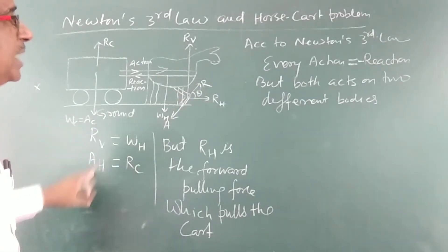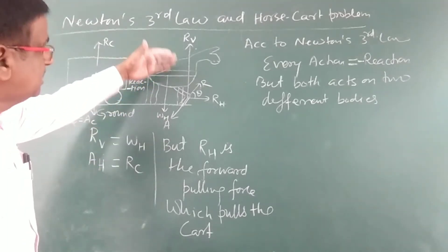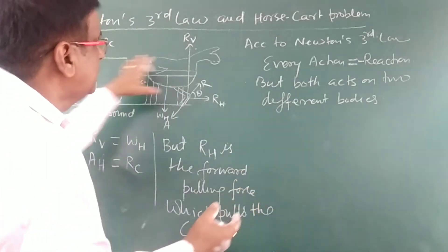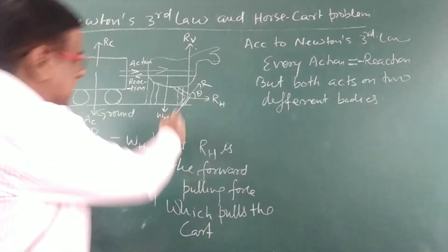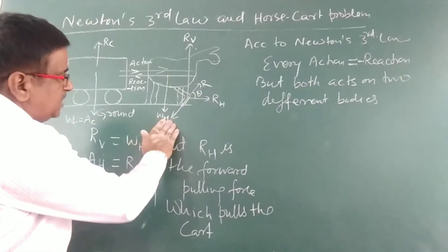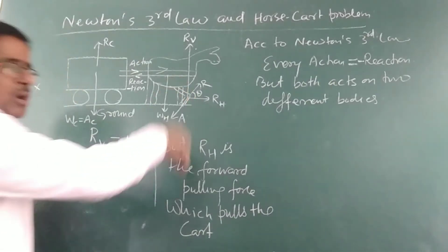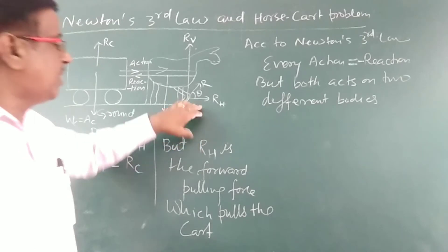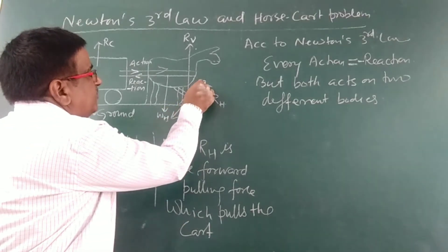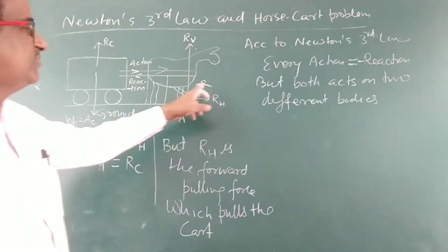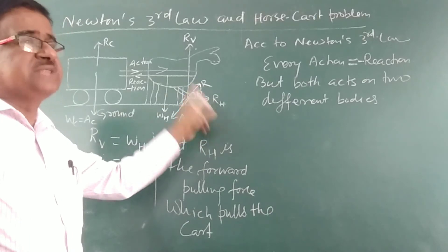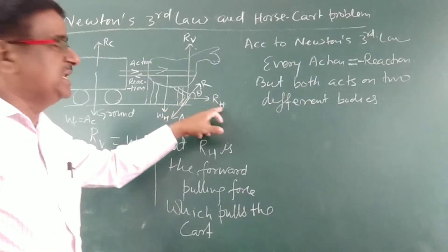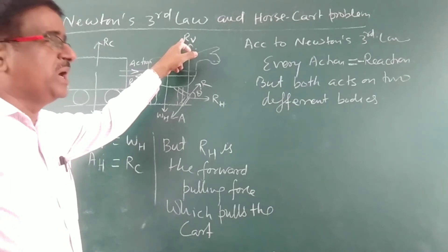Now, on the horse: the weight of the horse acts in the downward direction. To pull the cart, the horse applies force on the ground — this is called the action of the horse on the ground. The reaction from the ground acts on the horse. This reaction R has two components: a horizontal component Rx and a vertical component along the upward direction.